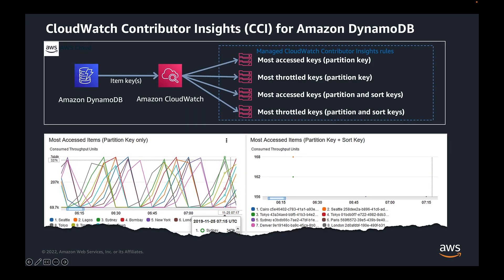CloudWatch contributor insights for Amazon DynamoDB logs frequently accessed keys and throttled keys. Many customers ask us for heatmaps, but this gives you the real data — which key was most frequently accessed. It can help you find application bugs previously undetected. One note: using CloudWatch contributor insights brings additional costs that can be significant on very active tables. An approach often used is to enable CloudWatch contributor insights only while troubleshooting and disabling it again when troubleshooting is finished.